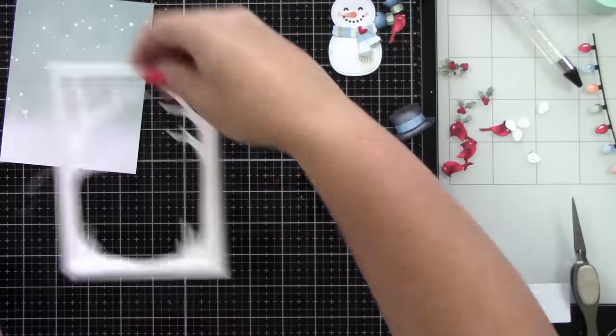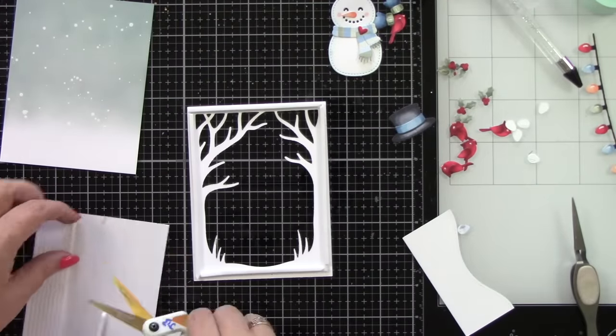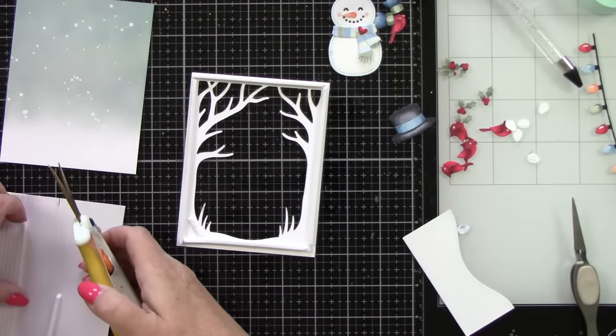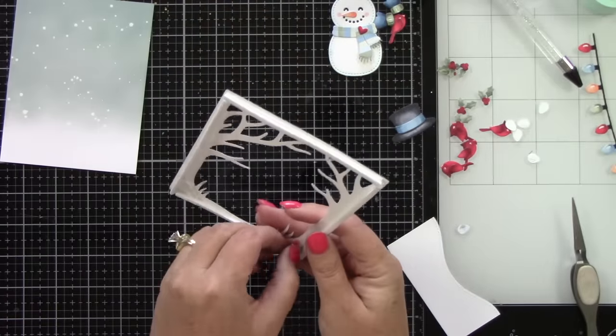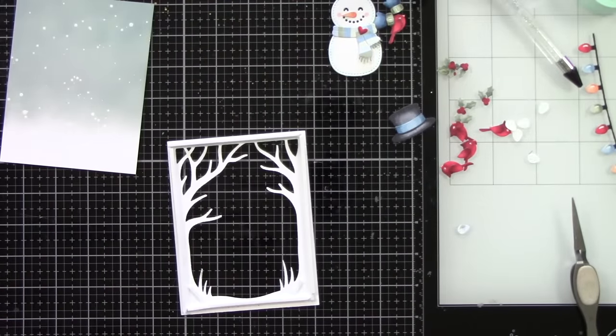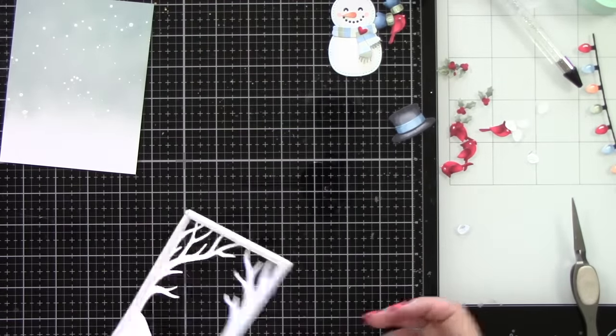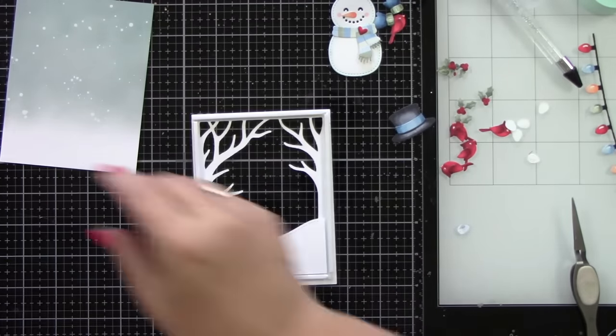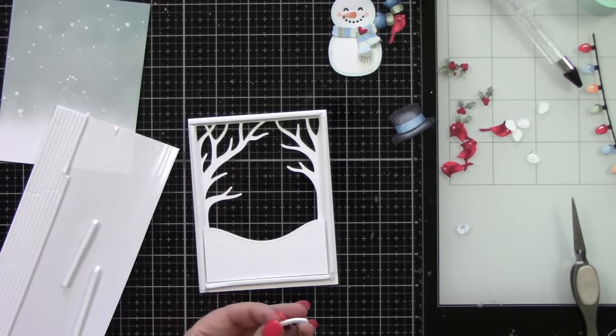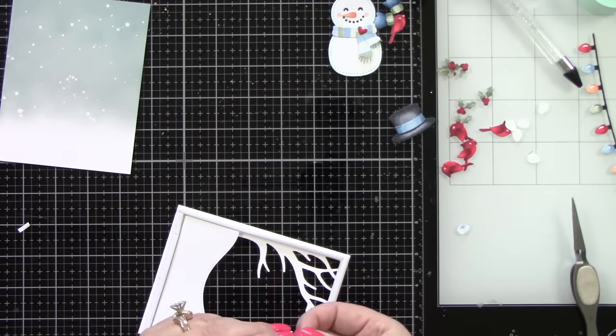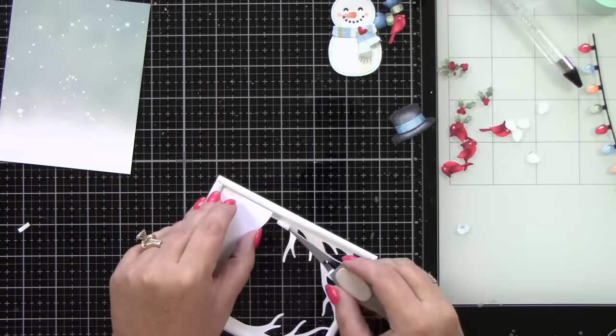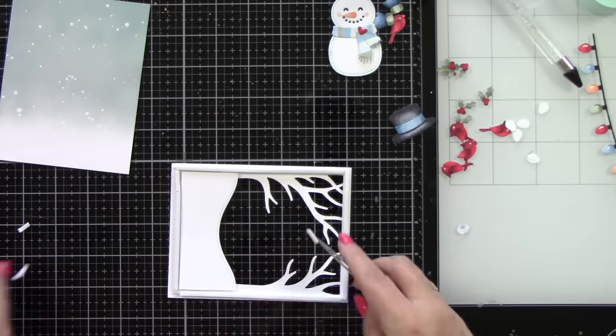I will add one layer of foam tape inside for the stitched hillside border die to lay. So this will also have dimension. This will not be flat against that background. I did realize I needed a little bit more foam tape, two more pieces at the top of that little snow drift. So I'm just going to use my scissors and put those in place.